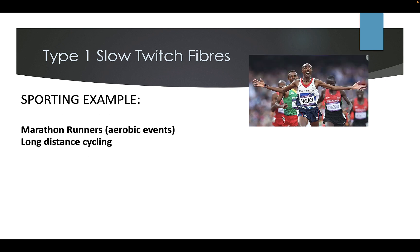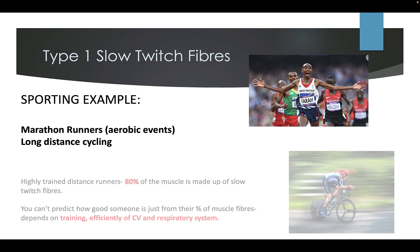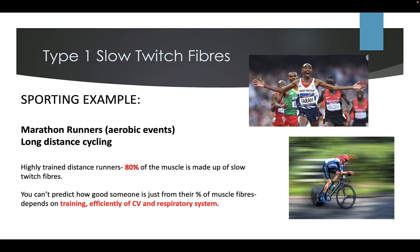Sporting examples include marathon runners or aerobic events, long distance cycling — anything prolonged. Highly trained distance runners have about 80% slow twitch muscle fibres. However, you can't predict how good someone is just based on their percentage of muscle fibres; this also depends on their training and the efficiency of their cardiovascular and respiratory systems.